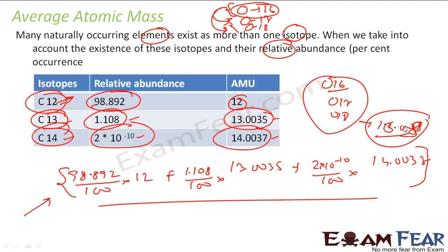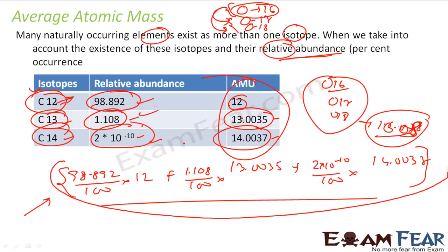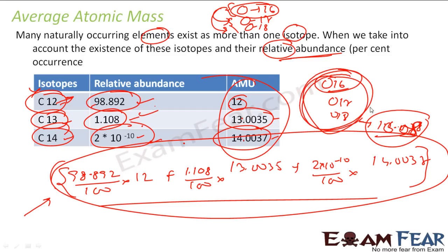So when you have an element with different isotopes and you know their relative abundance, you find the relative atomic mass by multiplying each isotope's mass by its fractional abundance and adding all the results — not a simple mean, but a weighted sum. That is how you find relative atomic mass.